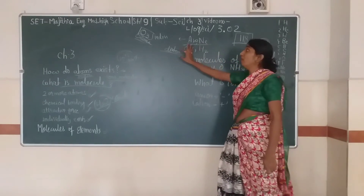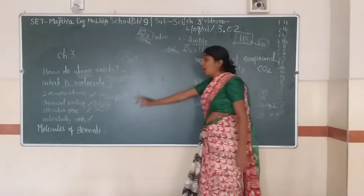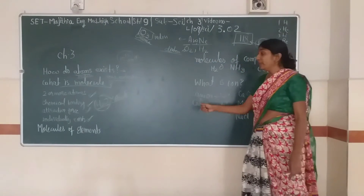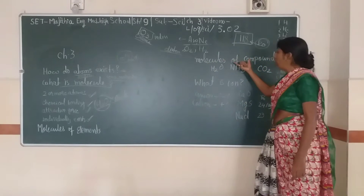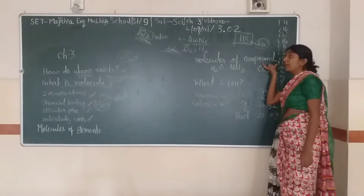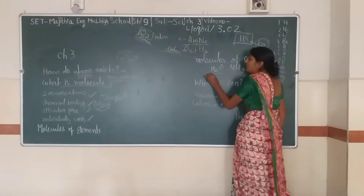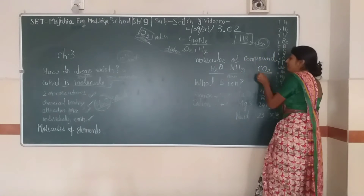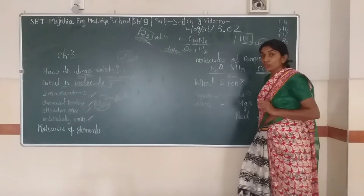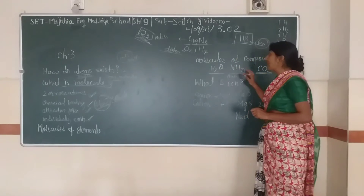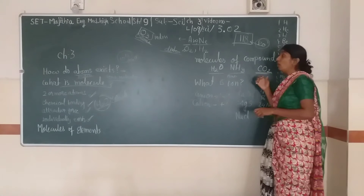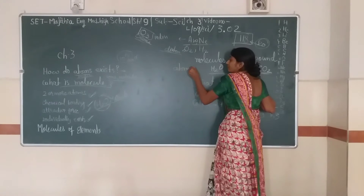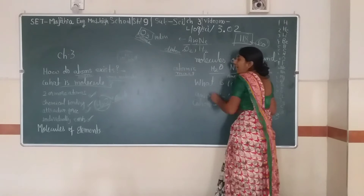These are two types of variation for how molecules of elements exist. We can also have molecules of compounds. For example, H₂O is a molecule, ammonia is a molecule, and carbon dioxide is also a molecule.